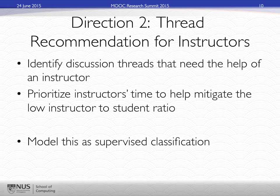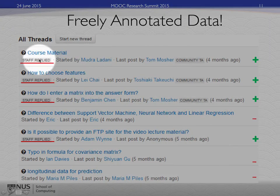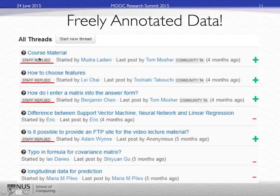In direction 2, we're looking at thread recommendations for instructors. We would like to prioritize the discussion threads that need the help of an instructor most urgently, so an instructor who only has 15 minutes of time between classes can choose which threads must be intervened on. We're going to model this as a supervised machine learning classification problem. We note that Coursera already provides freely annotated data in the sense that threads have been annotated with whether the staff has replied to it or not.